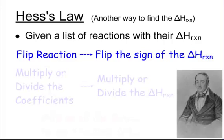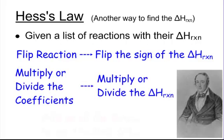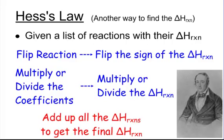The second thing you can do is multiply or divide the coefficients. If you multiply or divide the coefficients, you have to multiply or divide the enthalpy of the reaction by the exact same number. At the end, you add up all the enthalpies of the reactions to get the final enthalpy of the reaction. And that is Hess's Law.